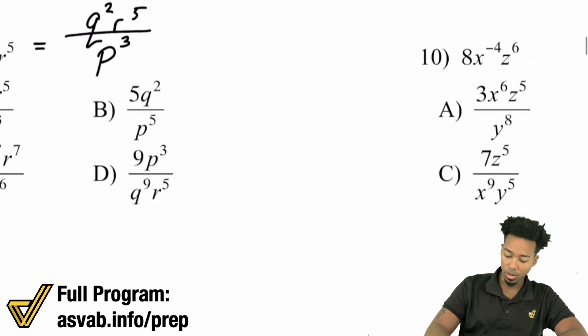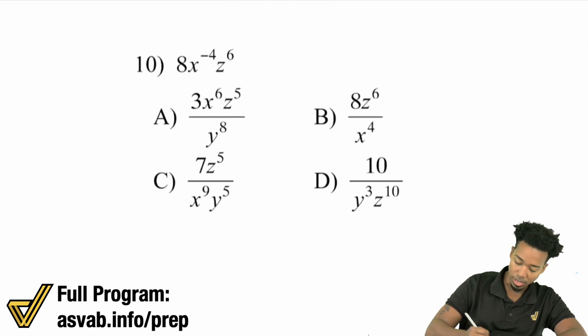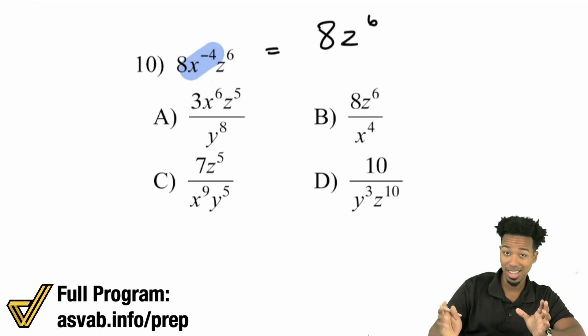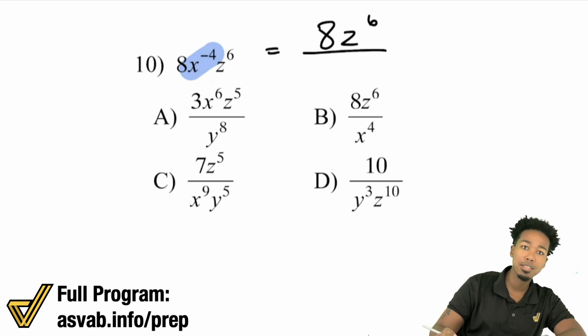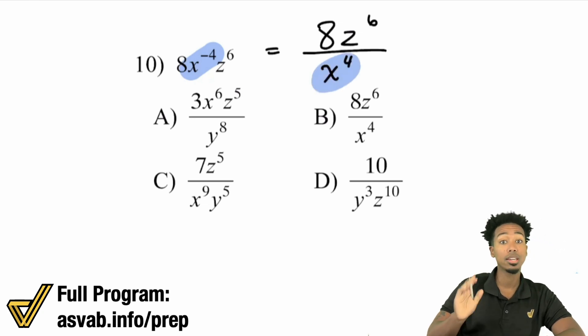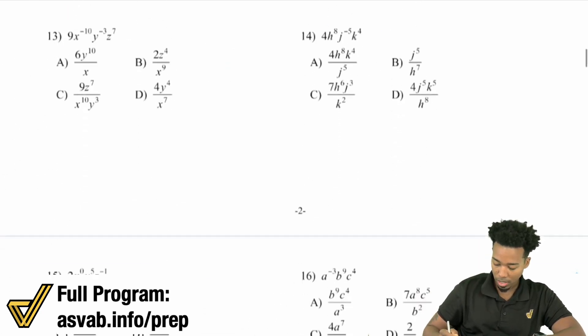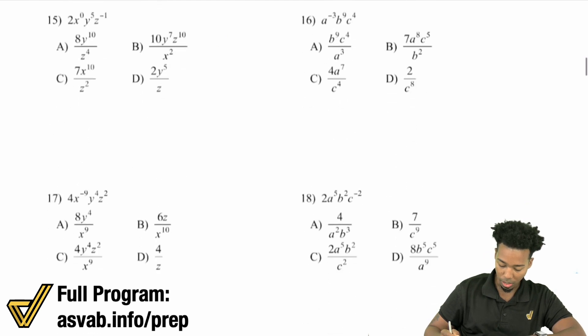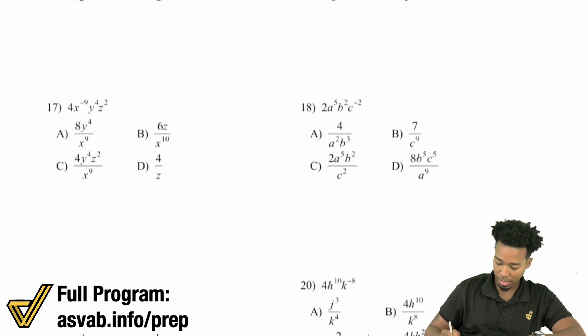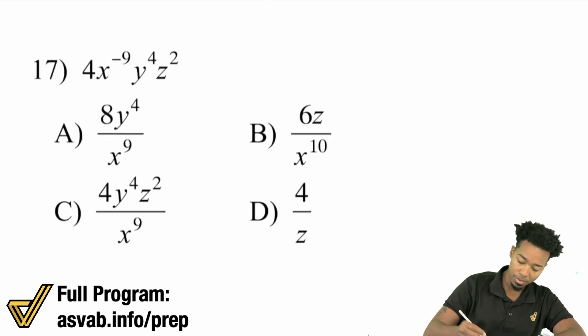Now, number 10, again, all we focus on is the negative piece. That's really it. So if we have x to the power of negative four there, that's going to become eight z to the power of six, because all of those pieces have positive exponents. And the x to the power of negative four gets placed in the denominator as a positive four, right there. Again, my math party people, it's really all about taking it one step at a time, understanding what's going on. So over here, if we want to take a look at another one here, let's say we're taking a look at let's say 17. Again, we have four x to the negative nine, y to the fourth, z squared.